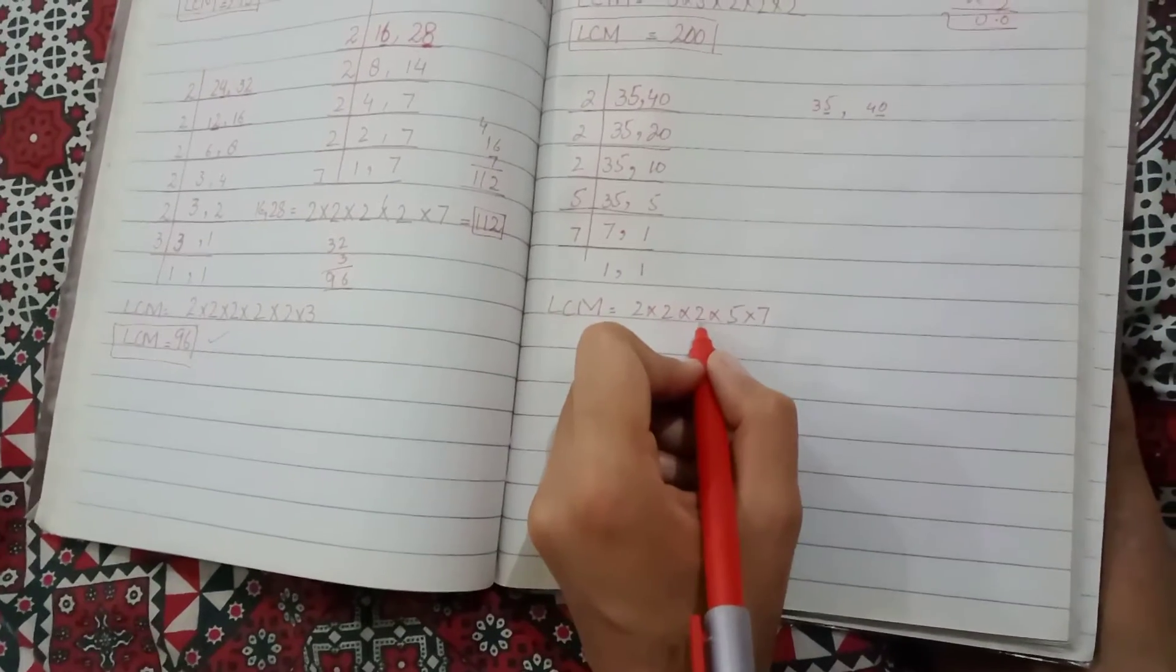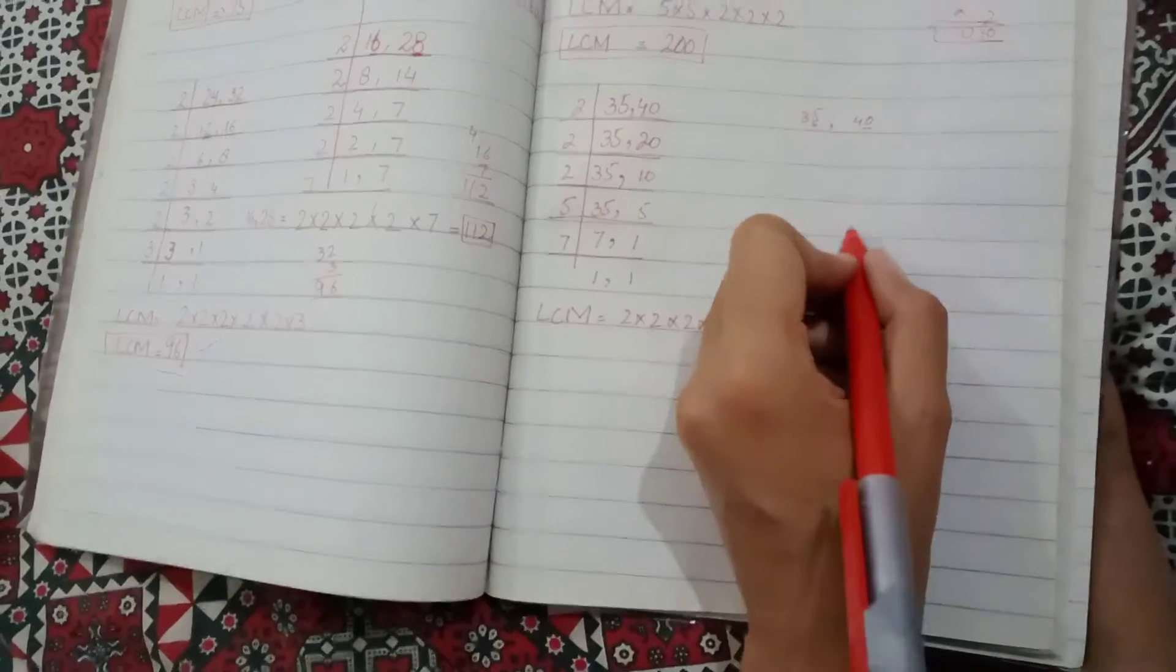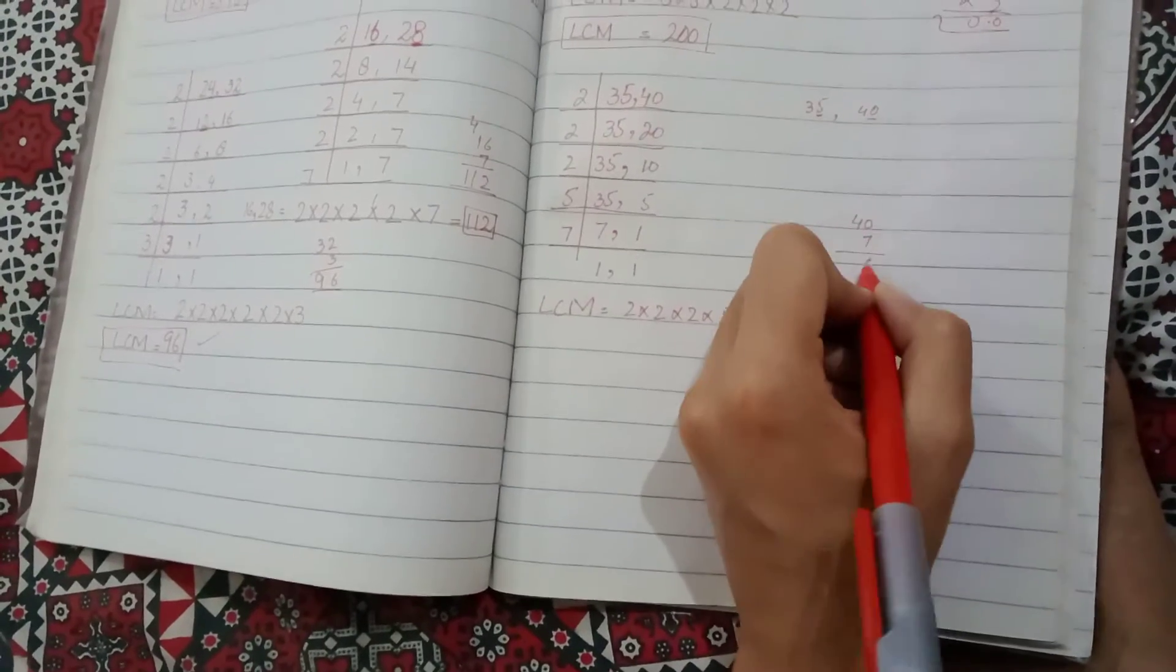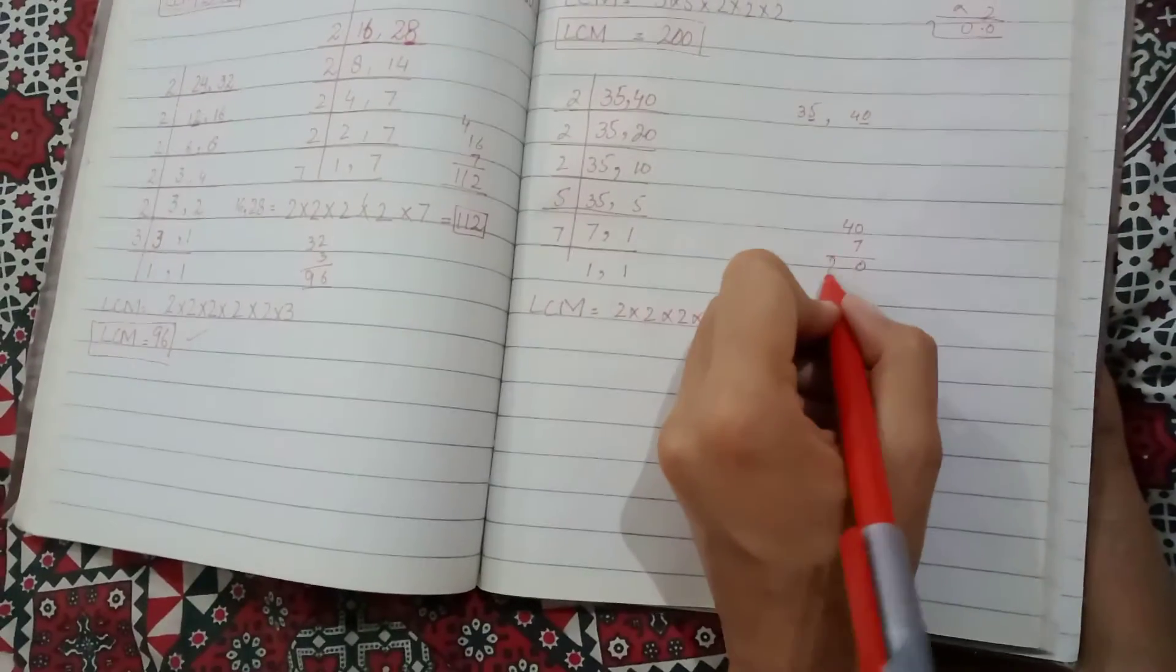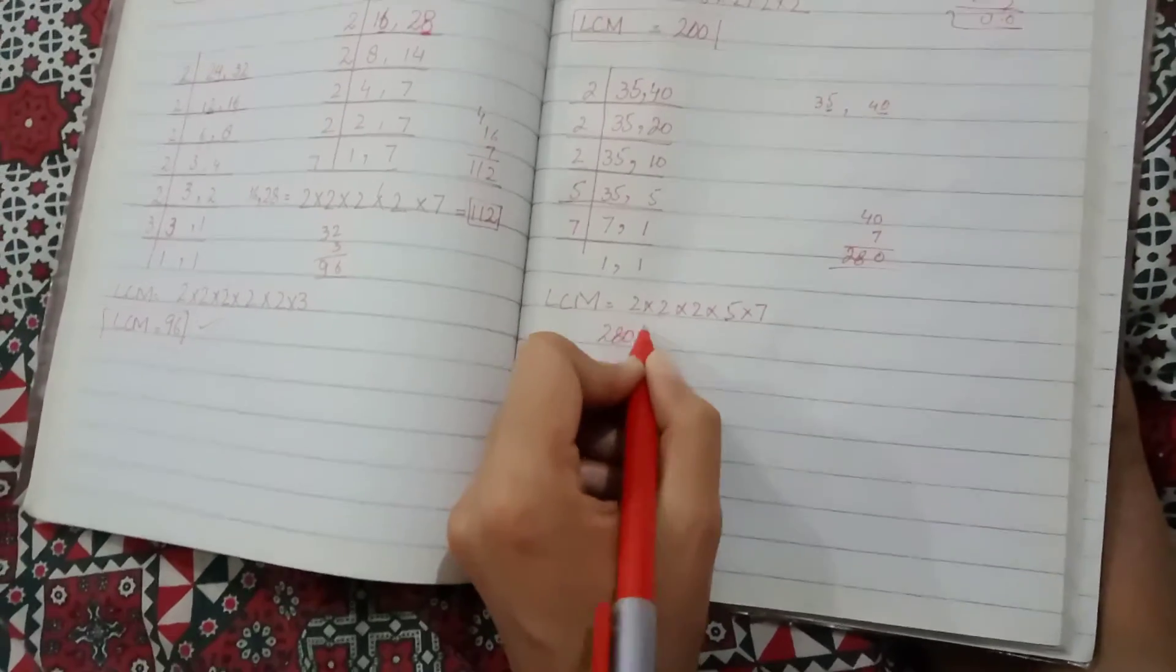2 into 2 is 4, 4 into 2 is 8. 8 into 5 is 40, and 40 into 7 is 280. So 280 will be the answer.